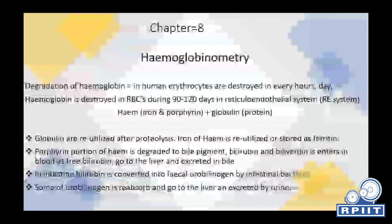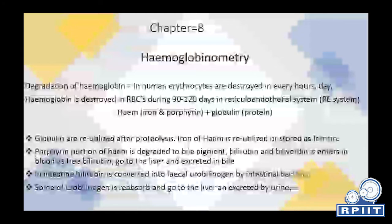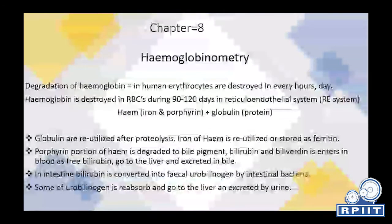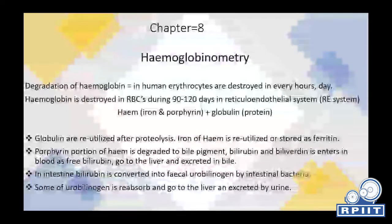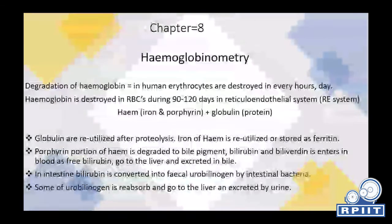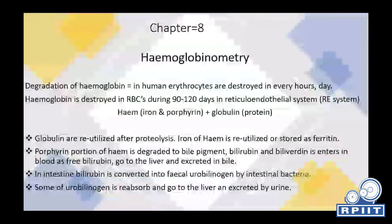The first topic is degradation of hemoglobin. Human erythrocytes are destroyed every day. Hemoglobin is destroyed in RBCs over 90 to 120 days in the reticuloendothelial system. As the RBCs break down, hemoglobin products also break into two products.